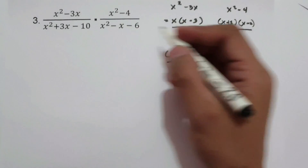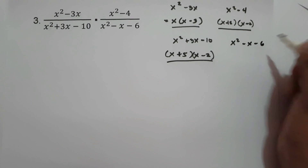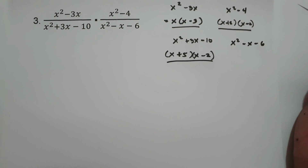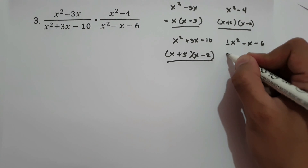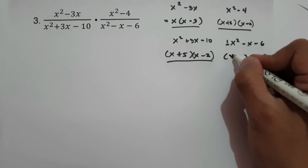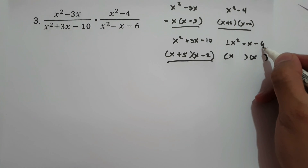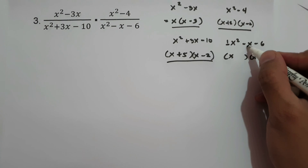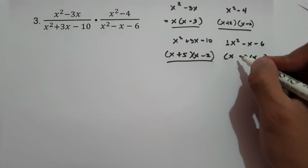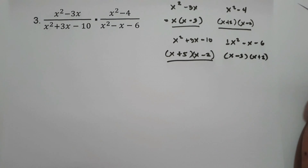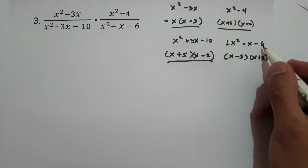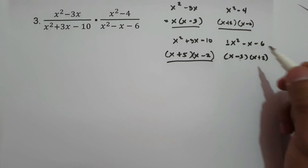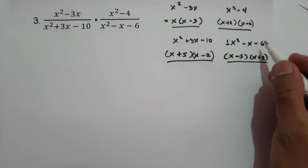For x² − x − 6, since a = 1 we need two numbers that multiply to −6 and add to −1. That is −3 and +2: −3 times +2 is −6, and −3 + 2 is −1. So x² − x − 6 factors as (x − 3)(x + 2).